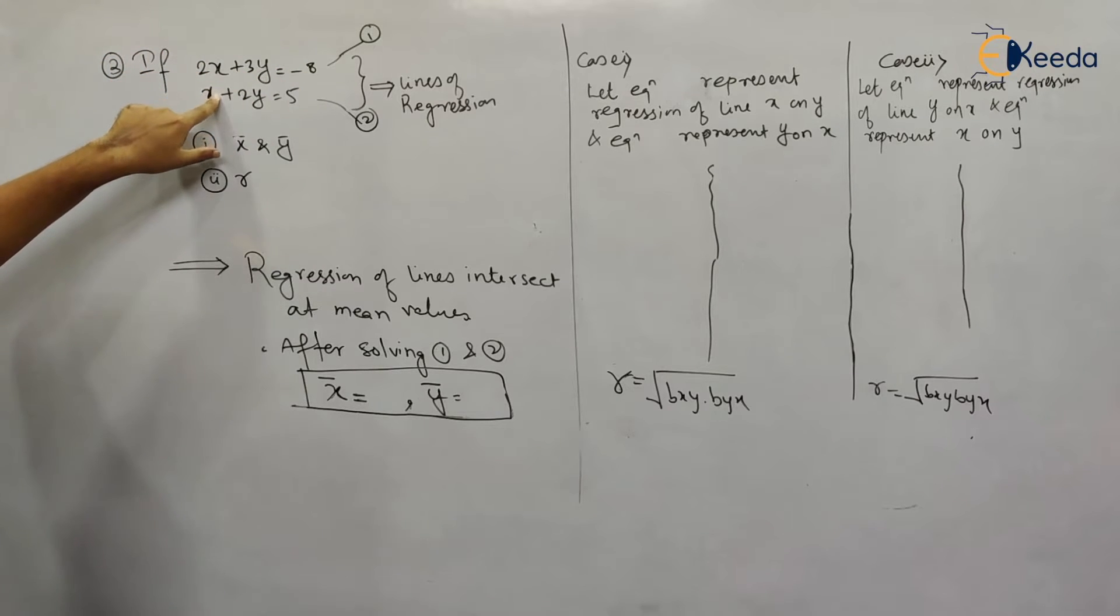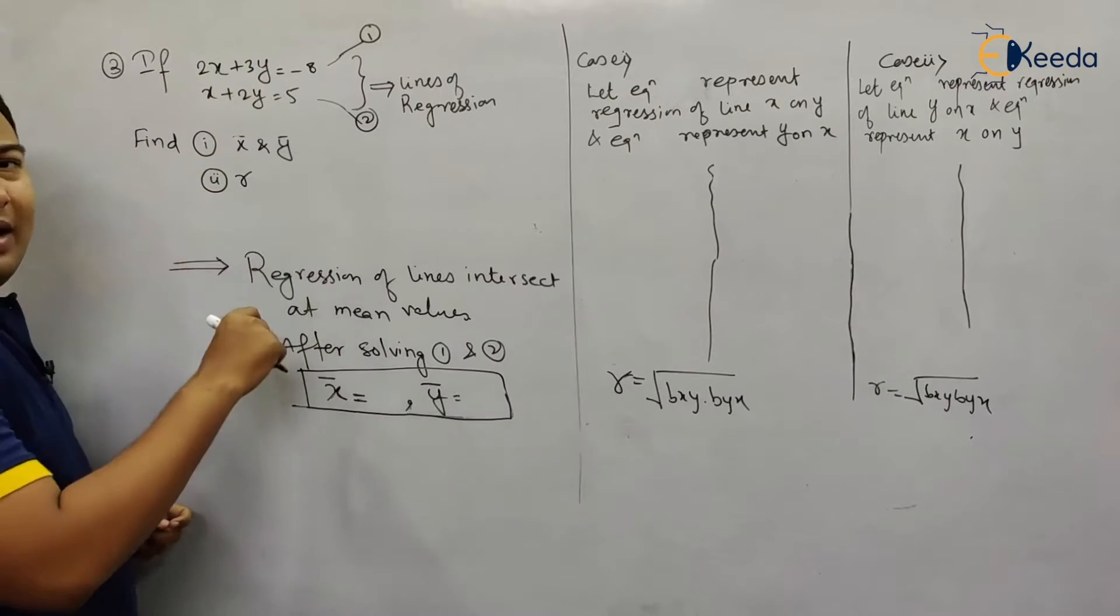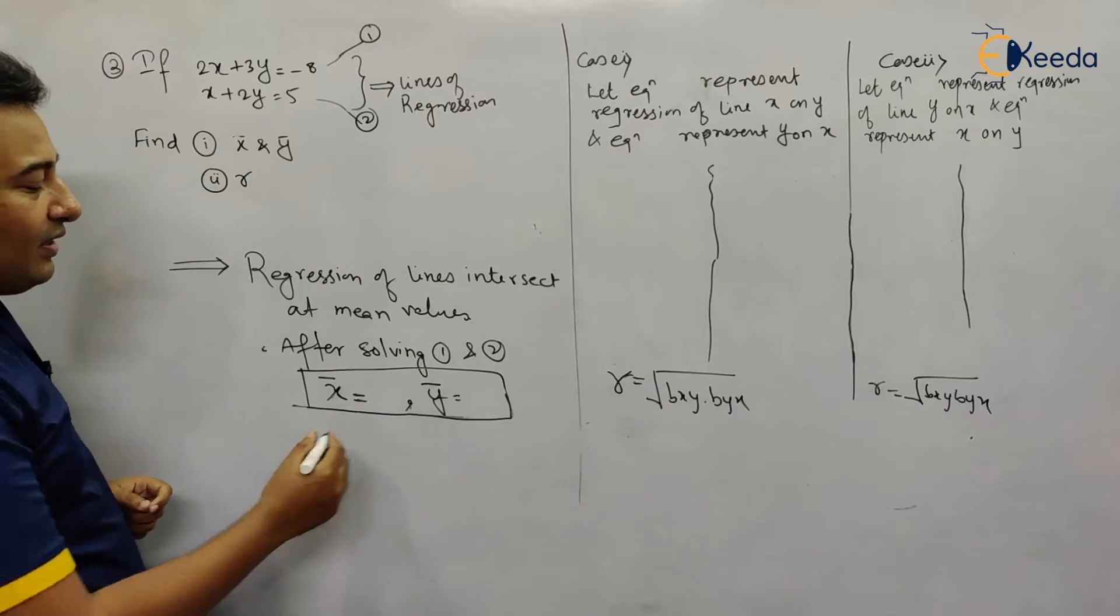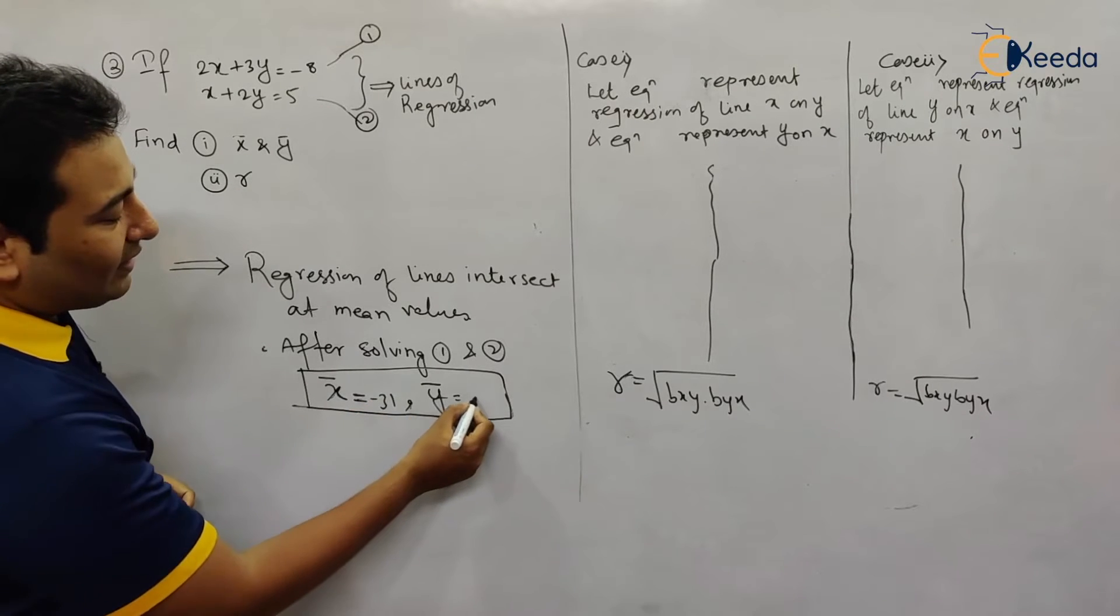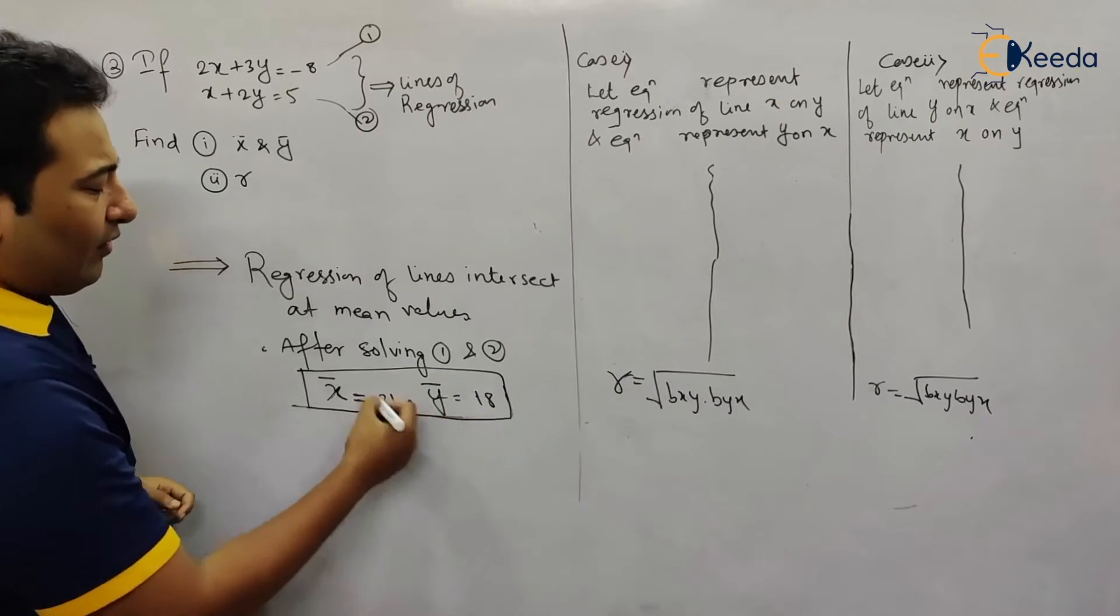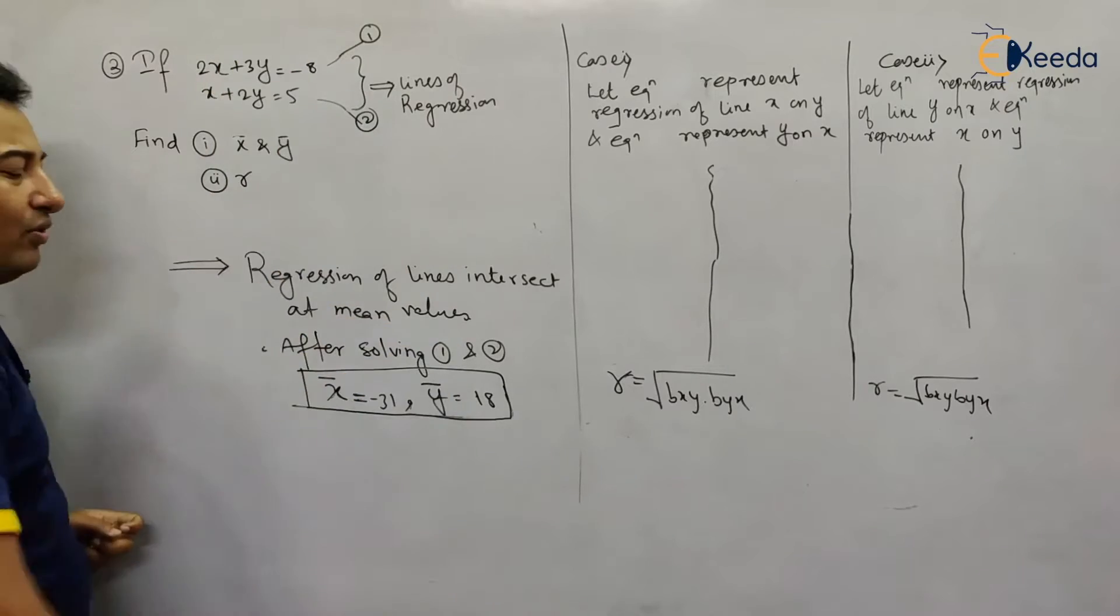The equations are given and we need to find the values of x̄ and ȳ. To find x̄ and ȳ, we solve them simultaneously and get the result as -31 and 18. You can verify this using a calculator.